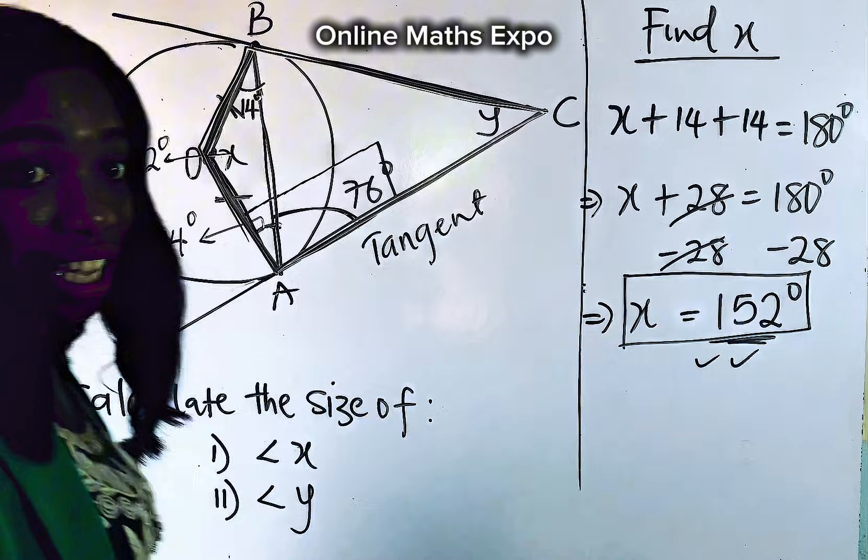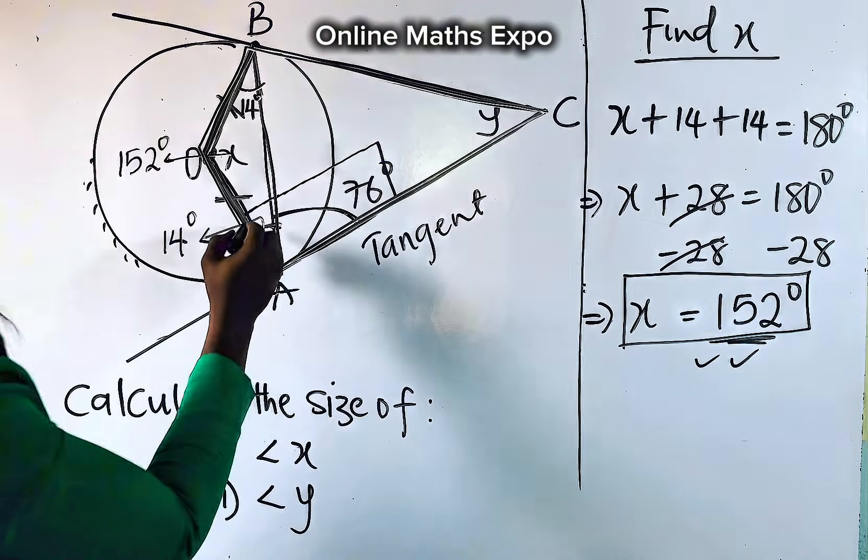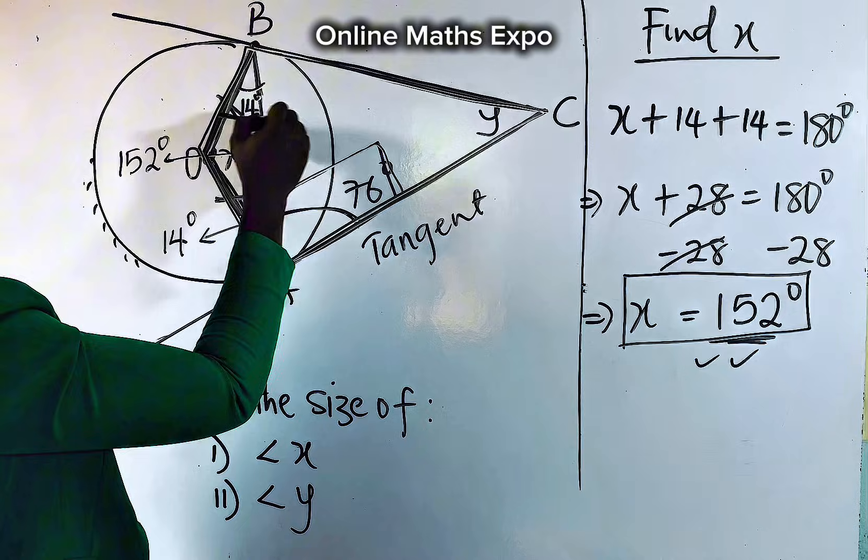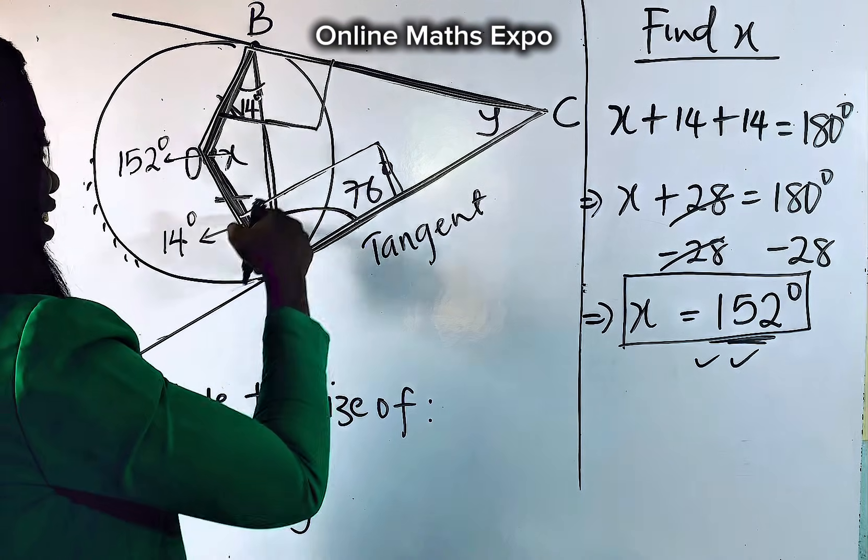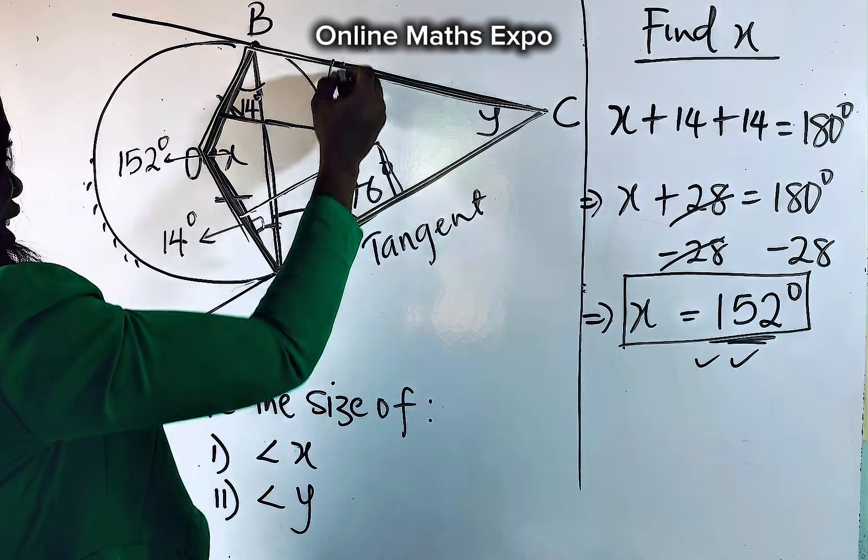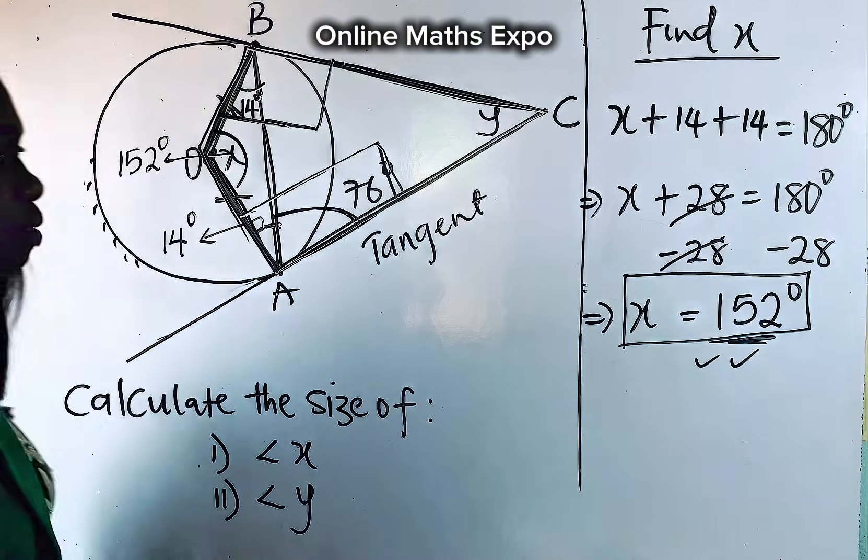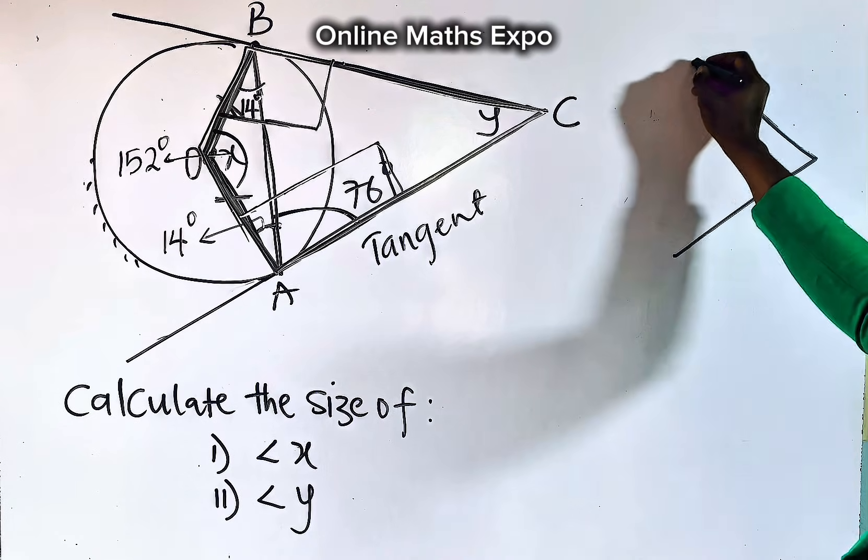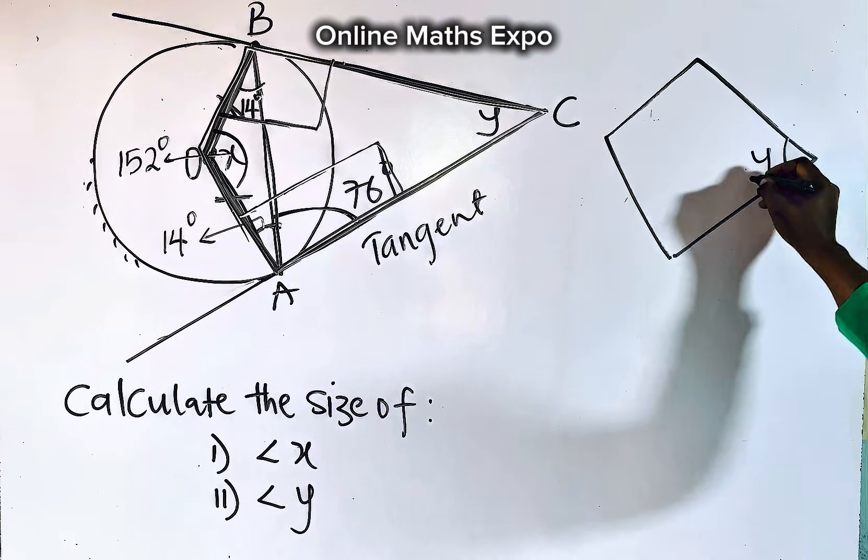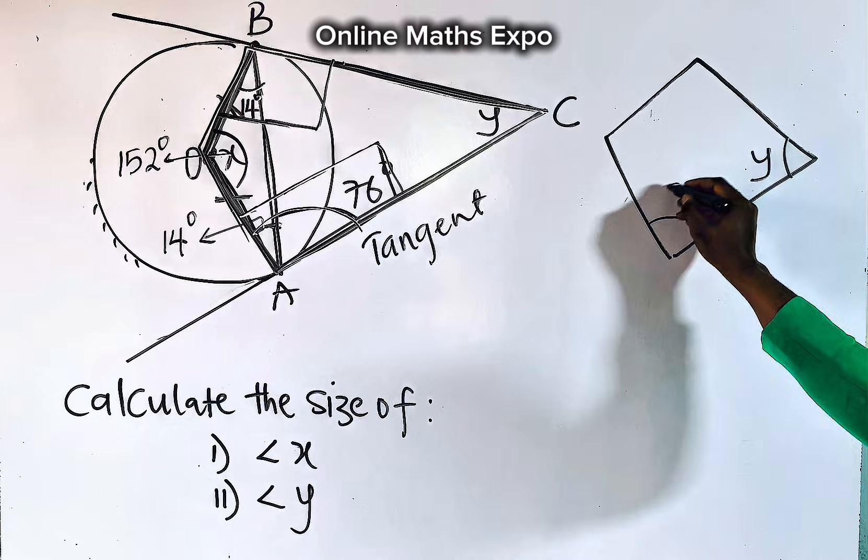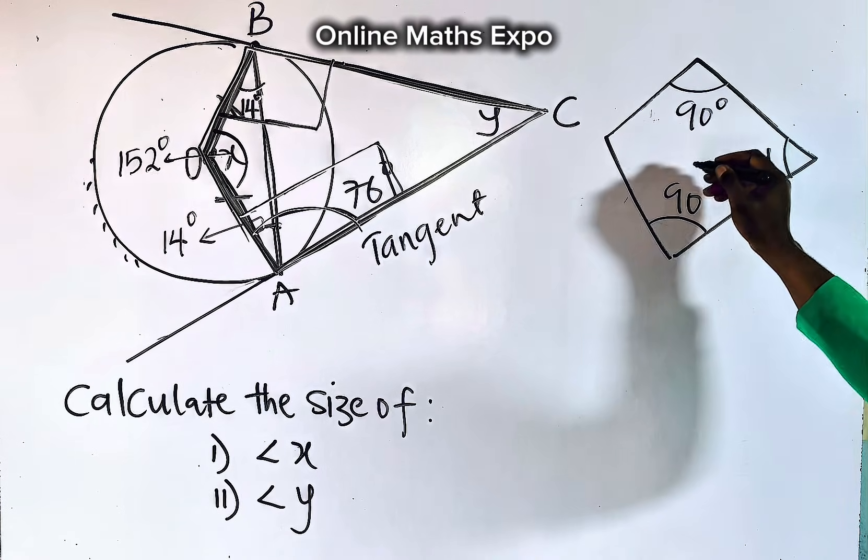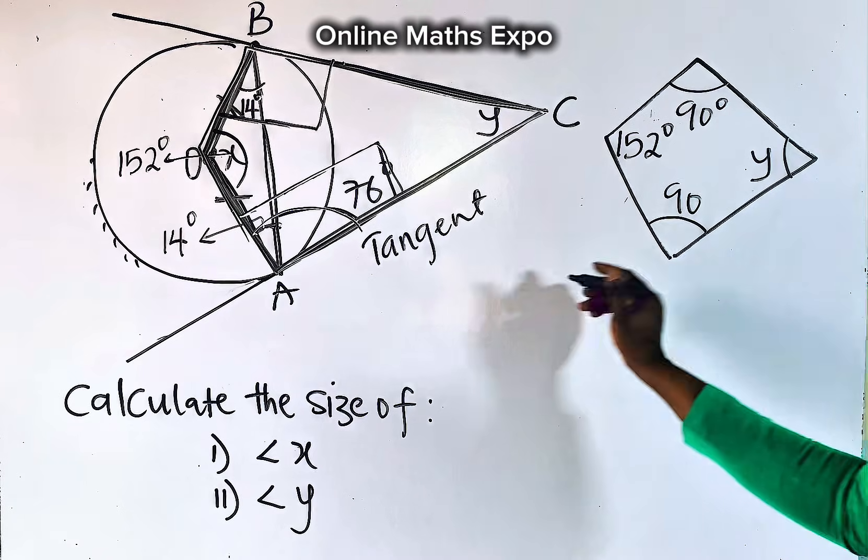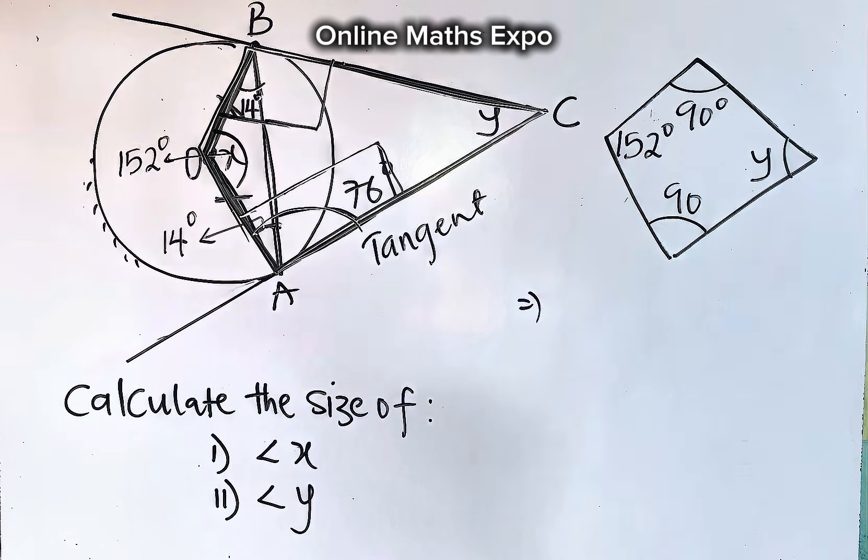And you know that we said from the radius down to the tangent makes angle 90. It also means this is your radius. And the radius down to your tangent should also give you 90 degrees. So it means here is 90. This angle here is 90. And this one is 90. And this one at x is 152. Let's bring that shape out to get the value of y. This place is our y. And we said from here to here is our 90 degrees. From here to here is also 90 degrees. And this angle x here is 152 degrees.